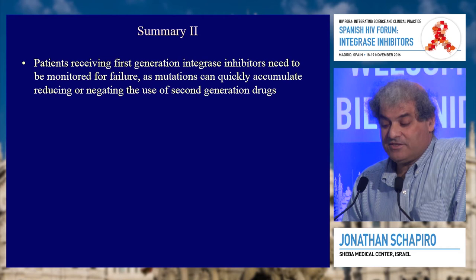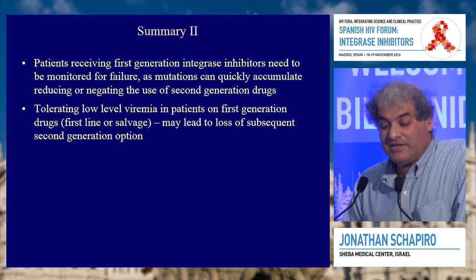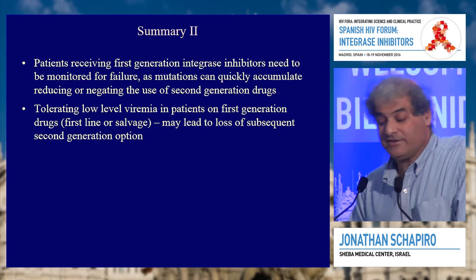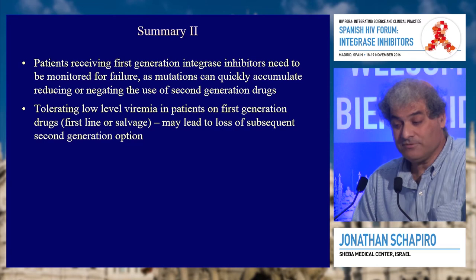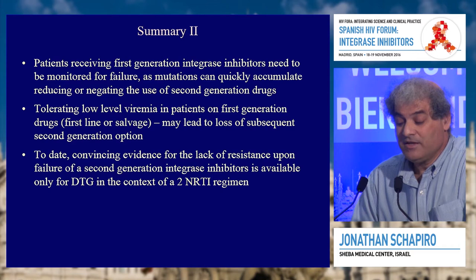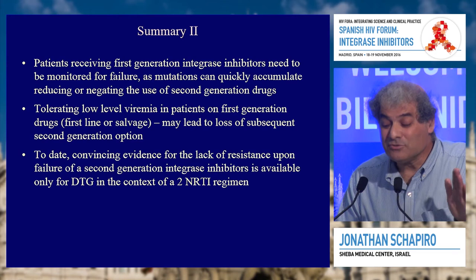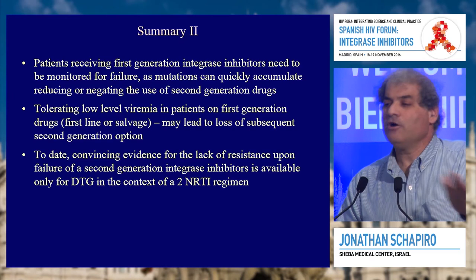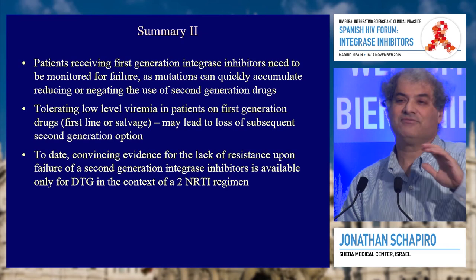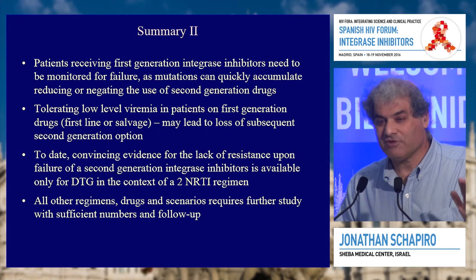To summarize: first- and second-generation integrase inhibitors have diverse resistance characteristics. Despite all being very potent, this has implications for their optimal clinical use. Transmitted integrase resistance may likely have a greater impact on first- than on second-generation agents. Patients receiving first-generation integrase inhibitors need to be monitored for failures, as mutations can quickly accumulate, reducing or negating the use of second-generation drugs. Tolerating low-level viremia in patients on first-generation drugs may lead to loss of subsequent second-generation options. Convincing evidence for the lack of resistance upon failure of second-generation integrase inhibitors is available only for dolutegravir in the context of a 2-NRTI regimen.